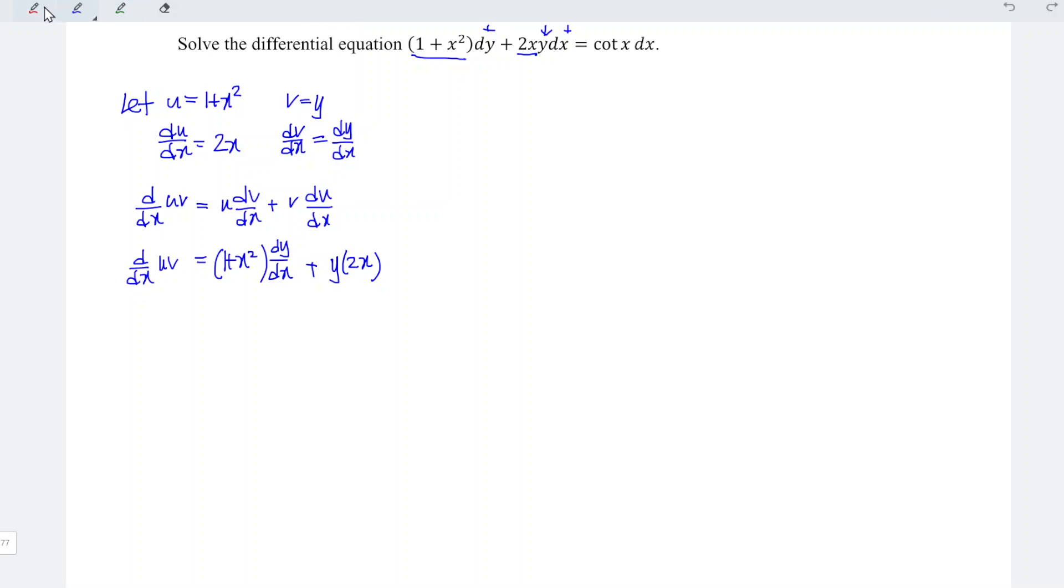If we times the entire equation by dx, we should obtain differentiate uv is equal to 1 plus x square times dy plus 2xy dx, which is exactly the term that we can see here.